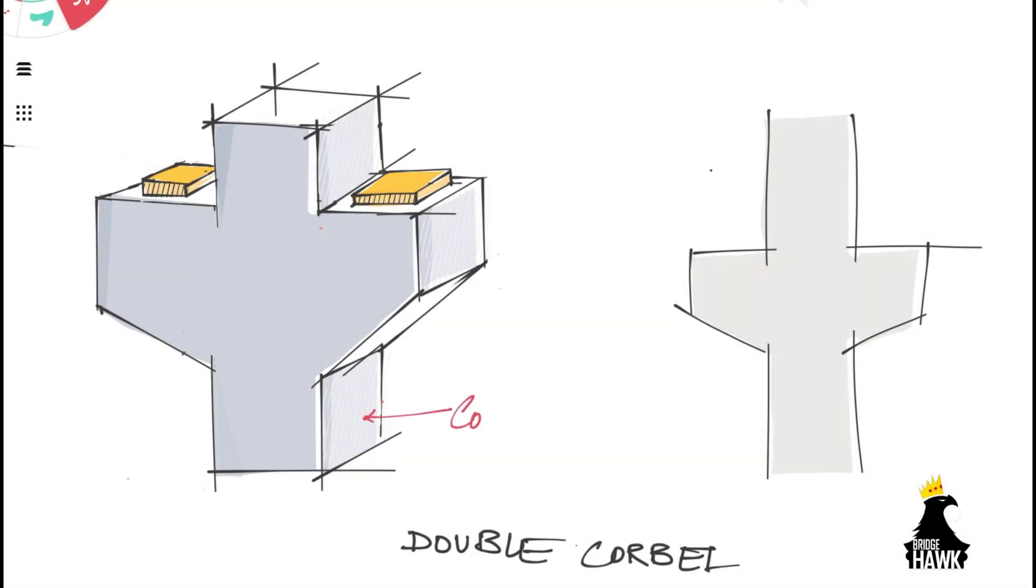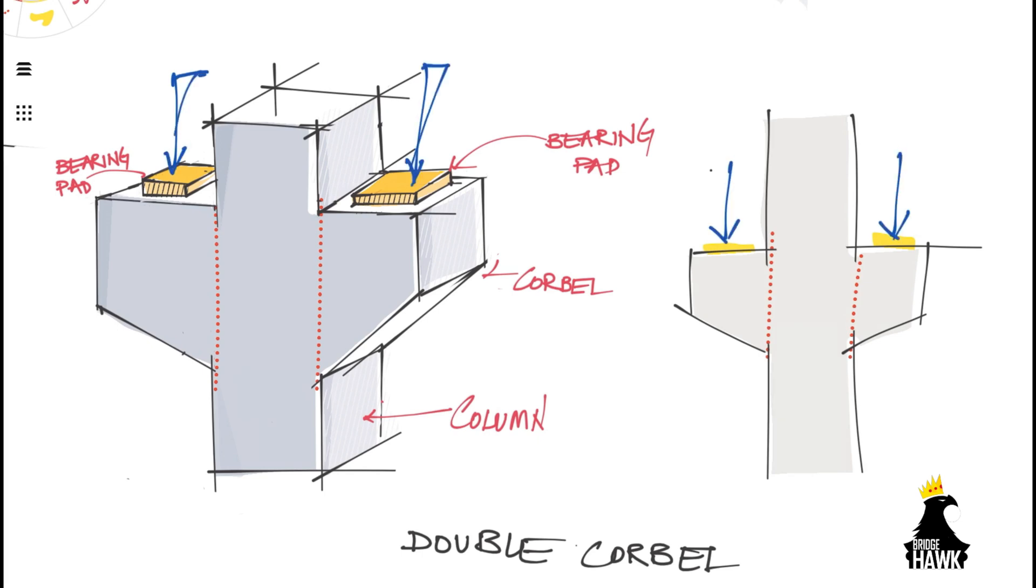A double corbel is a case where two protrusions are placed opposite to each other. Both corbels may have different dimensions based upon the load intensities. Double corbels can be designed with different depths and shapes at the same time.